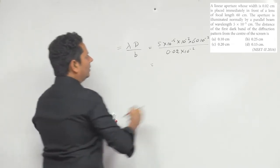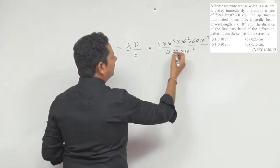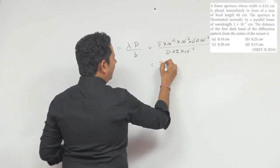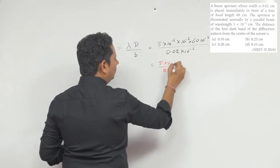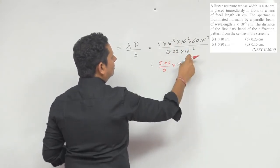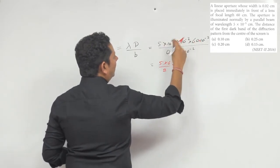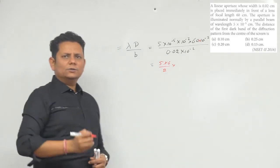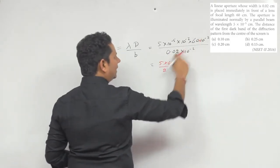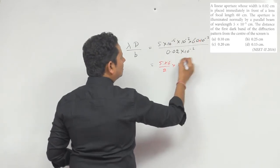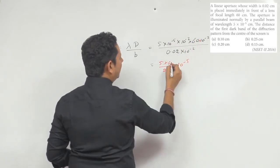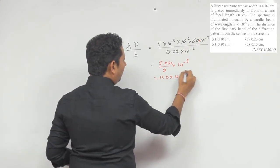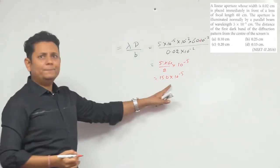Solving the powers of 10: we get 5×6 divided by 2, multiplied by 10 to the power (−2 − 2). The 10⁻² terms cancel, leaving 10⁻⁵. This gives 150×10⁻⁵ meters after multiplying 5 × 6 = 30 divided by 2... simplifying to 150×10⁻⁵ meters.